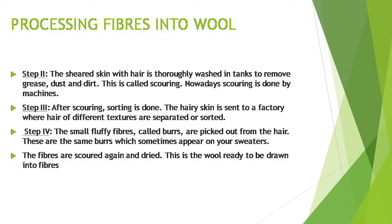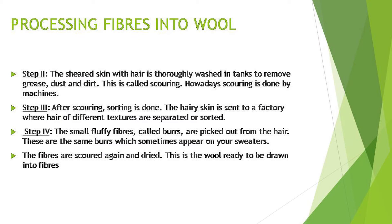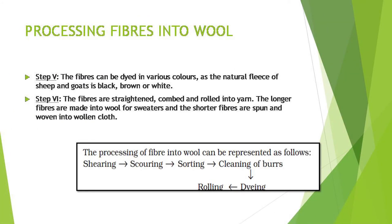The separation of different varieties is called sorting. Next, small fluffy fibers called burrs are picked out from the hair — these are the same burrs which sometimes appear on your sweaters. The fibers can be dyed in various colors, as the natural fleece of sheep and goats is black, brown, or white.